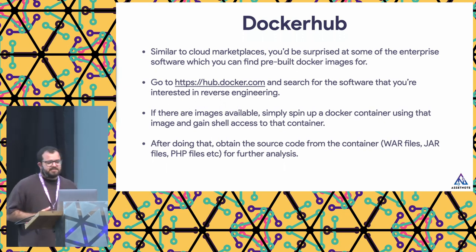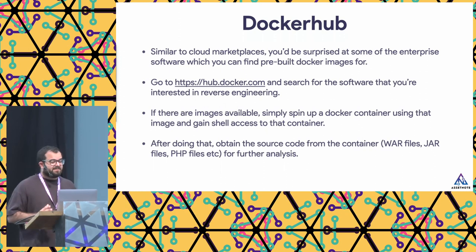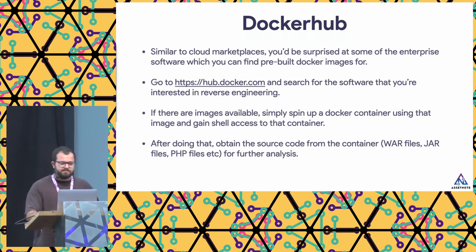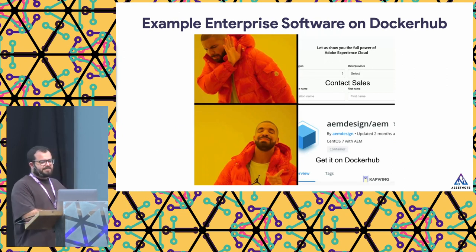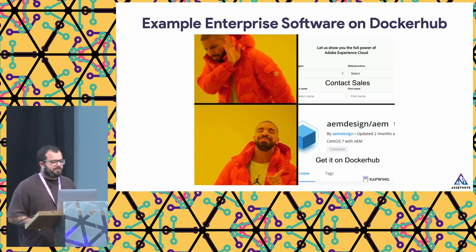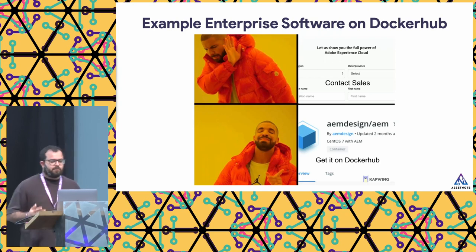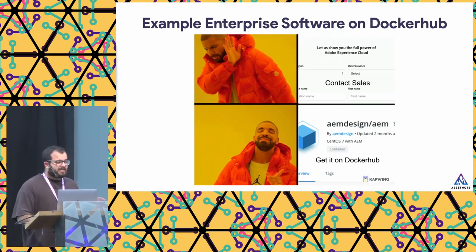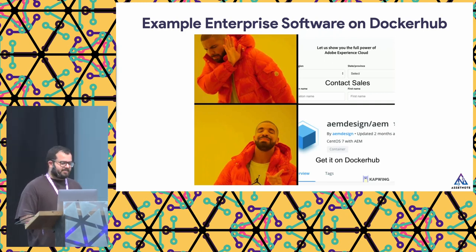This is similar to cloud marketplaces, but you're most likely running random images that people have built on the internet. For example, you can obtain Adobe Experience Cloud either by contacting sales or relying on a Docker image that's already been built and pushed to Docker Hub. It was updated two months ago, so it's still current enough for security analysis. There's a lot of enterprise software on Docker Hub, sometimes posted inadvertently, which is great for security researchers to get access to the source code.